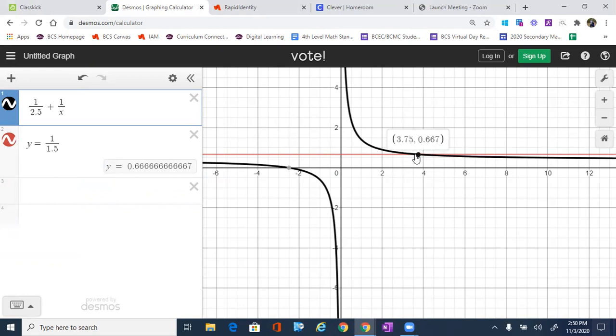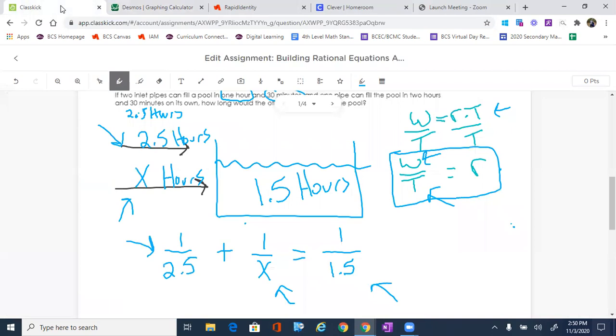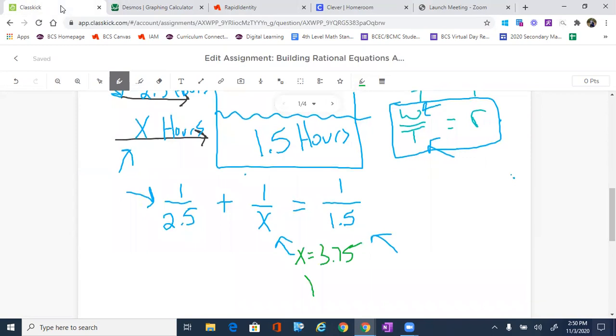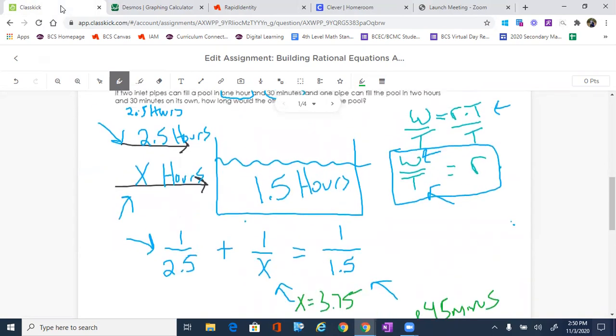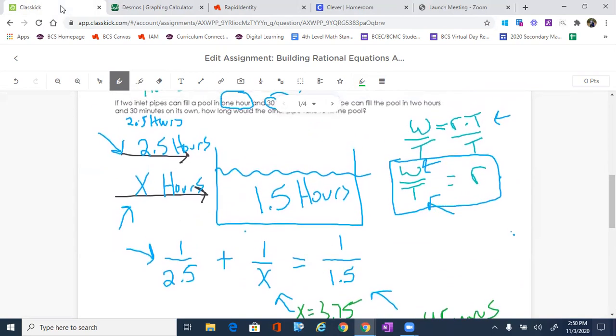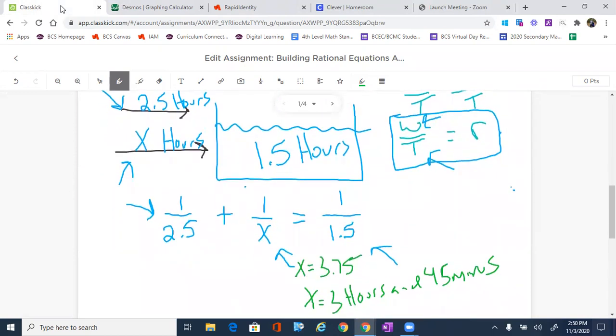So essentially 3 hours and 45 minutes is the second pipe. So that tells us that X equals 3.75 or X equals 3 hours and 45 minutes. And all that means is that the first pipe took 2.5 hours for it to fill up on its own, and the second pipe would fill that pool up on its own in 3 hours and 45 minutes. But combined, they can work together and accomplish the same task in an hour and a half.